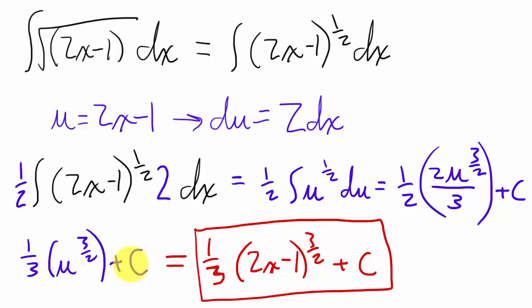And then, the last step, substituting everything back into the x, the original variable, we have 1 third the quantity 2x minus 1 to the 3 halves plus c.